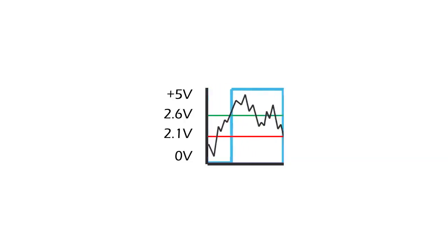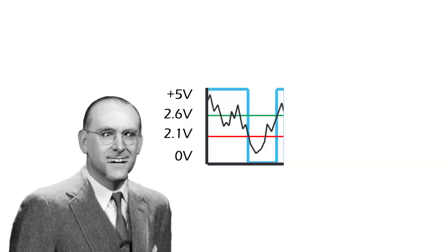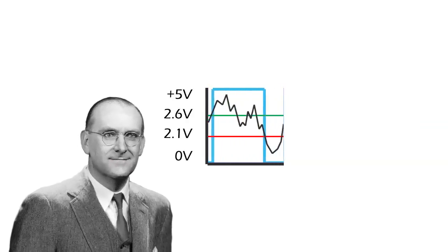The Schmitt Trigger is a specialized comparator with hysteresis. The input signal is compared against an internal upper and lower threshold. When the input signal crosses the upper threshold of approximately 2.6 volts,